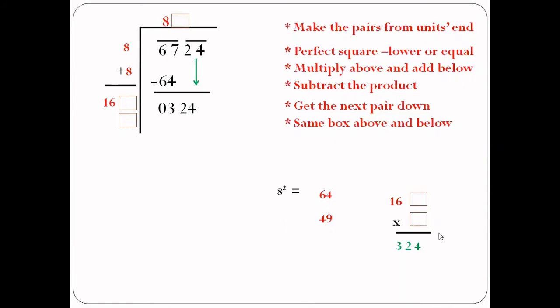We can use a technique: look at the unit place of the product 324, which is 4. We need a digit whose square has unit digit 4 — that is either 2 or 8. We try 2 first: 162 multiplied by 2 gives 324. That works, so we write the digit 2 in all three boxes.